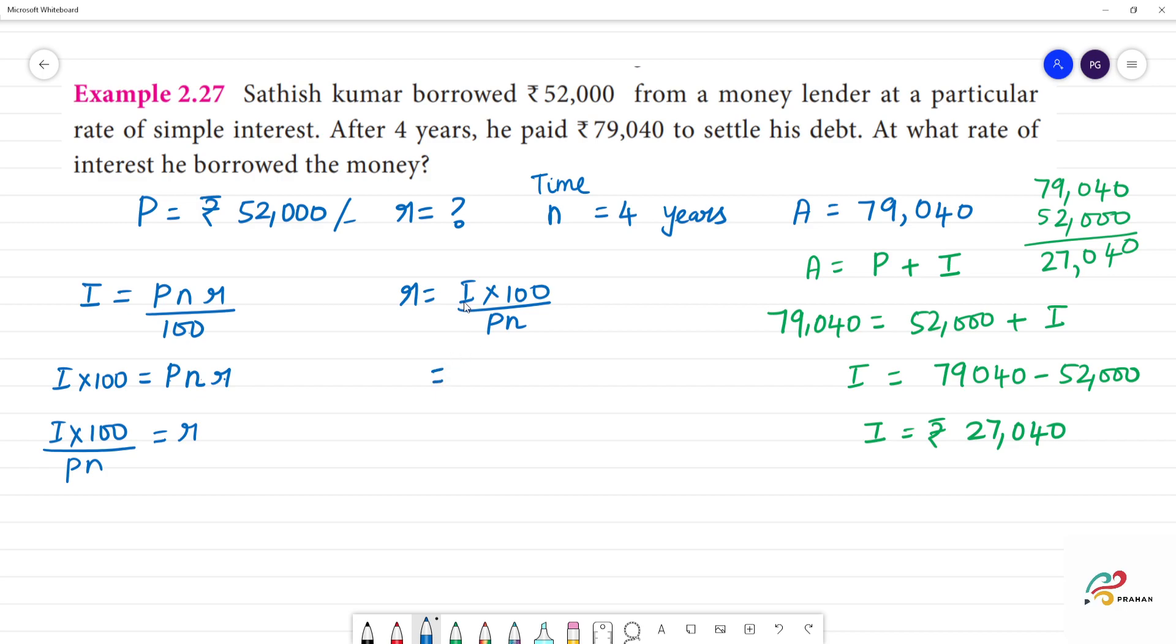We can write that R is equal to I into 100 divided by PN. So, I will write that 27,040 into 100 divided by 52,000 into 4.